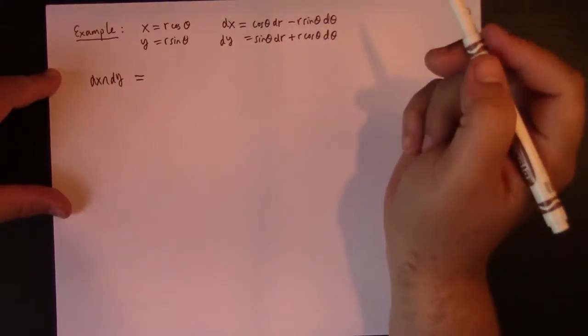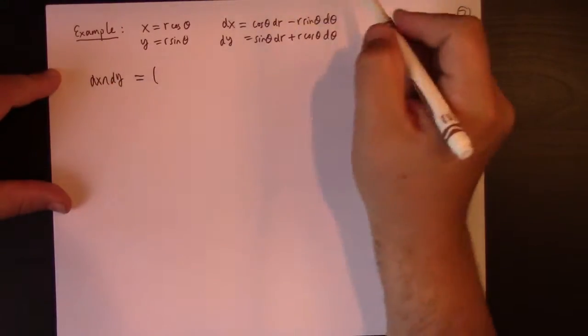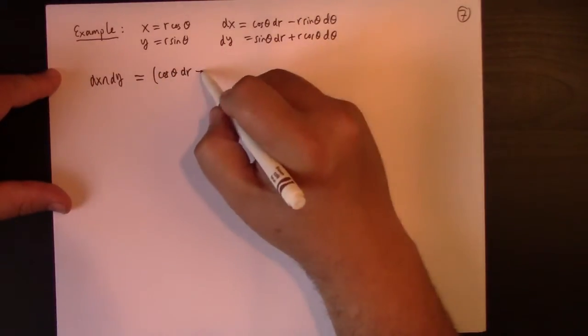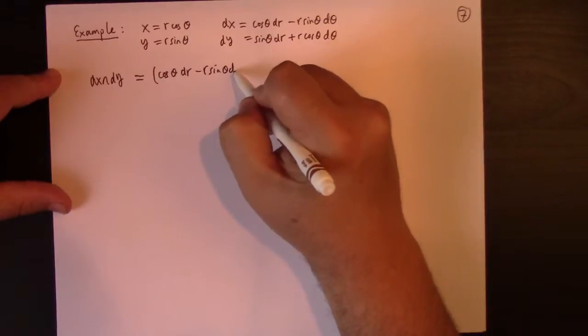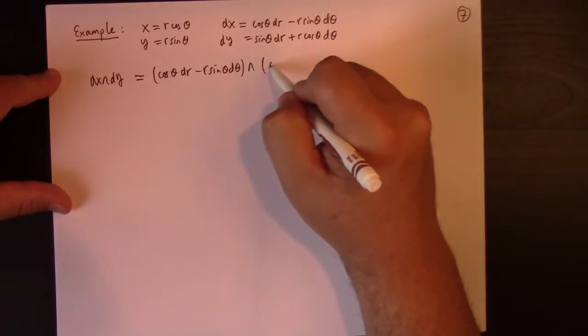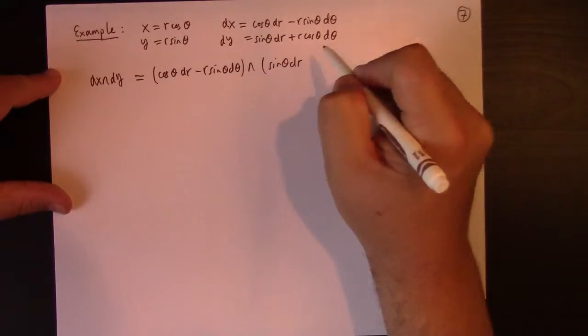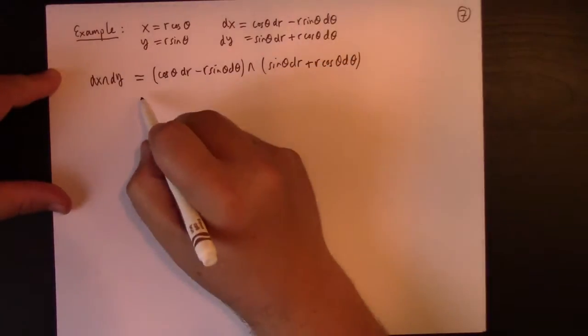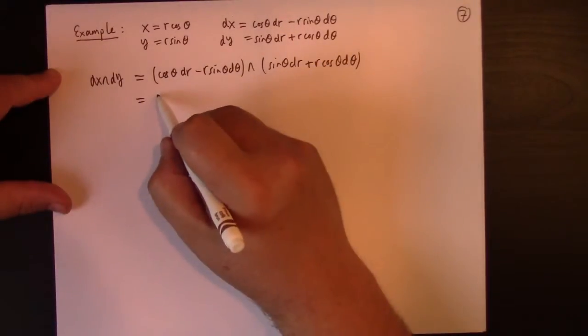Well, I can trade that for cosine theta dr minus R sine theta d theta wedged with sine theta dr plus R cosine theta d theta. Okay, great, well, that gives me sine theta cosine theta.